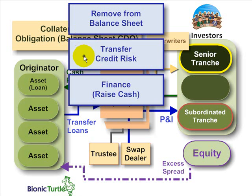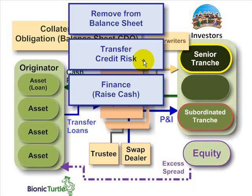Secondly, of course, there is a transfer of credit risk. In selling these loans, the bank has transferred most of the credit risk that it used to have — by virtue of owning the assets — to the classes of investors by way of these tranche securities. I said most, not all, because if they retain the equity tranche, then they retain some of the credit risk. So secondly, credit risk transfer is a key motivation. And finally, third, is simply funding or financing or the raising of cash. The bank not only removes the assets from the balance sheet, but it sells them for cash and raises cash. There may just be a simple financing motive. So those are my top three motivations.